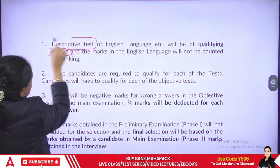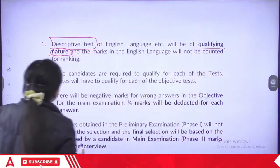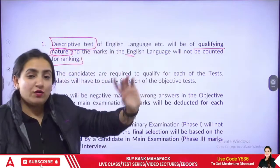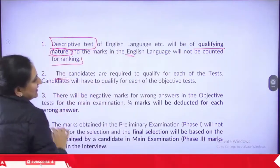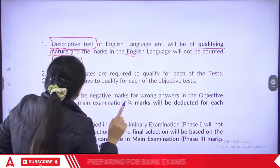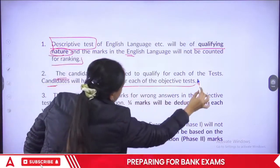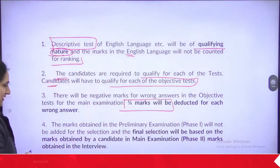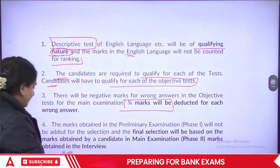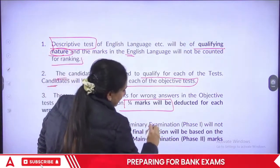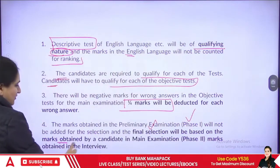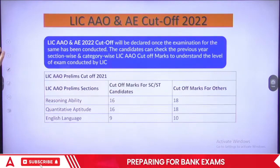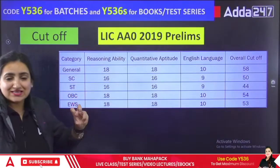The descriptive test is qualifying in nature — the marks in the English language will not be counted for ranking, but you must qualify it. Candidates are required to qualify each of the objective tests. There will be negative marking — one-fourth marks will be deducted for each wrong answer. The marks obtained in prelims Phase 1 will be added for selection at the final stage based on marks obtained in Phase 2.